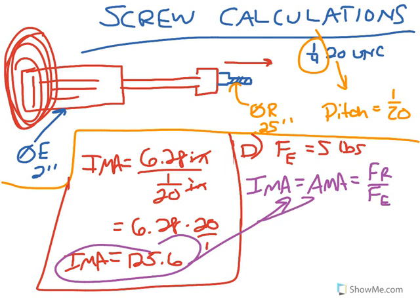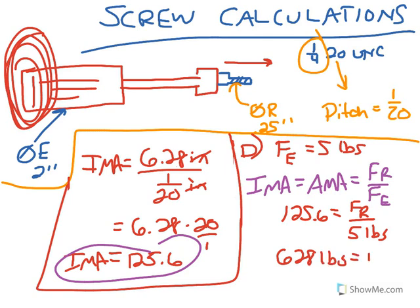The actual mechanical advantage is the force of the resistance divided by the force of the effort. So putting ideal mechanical advantage in here, it's going to give us 125.6 equals the force of the resistance, which we're trying to figure out, divided by the force of the effort, which is 5 pounds. If we multiply both sides by 5 pounds, it's going to give us 628 pounds. And that answer theoretically is true if the ideal equaled the actual, but it's not true at all because there is a lot of friction in a screw. This would be cut down substantially. But theory-based calculations, that's what ideal are.